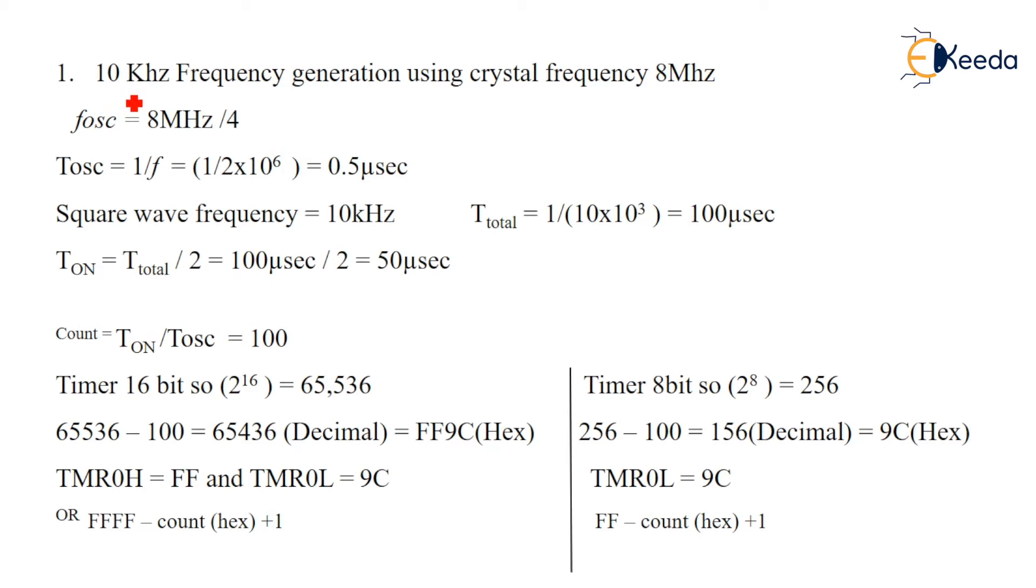Here, generate a square wave with frequency 10 kilohertz using crystal frequency 8 megahertz. We are using internal clock frequency so your f_oscillator will be 8 MHz divided by 4. Without prescaler, so no need to divide by another number - only 8 MHz divided by 4. T_oscillator - we know the relation between time and frequency, both are inversely proportional, so T_oscillator equals 1 upon f_oscillator which comes to a value of 0.5 microseconds.